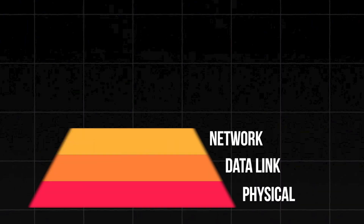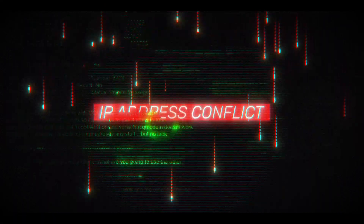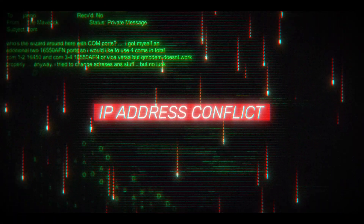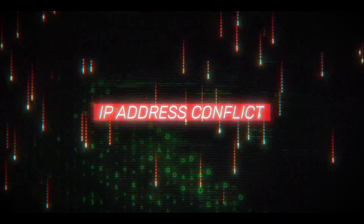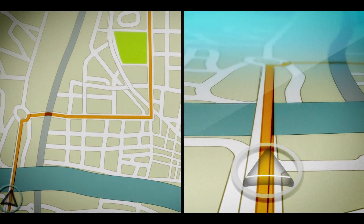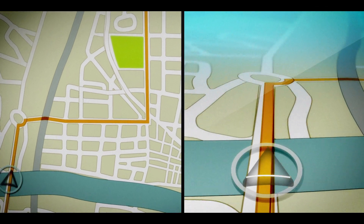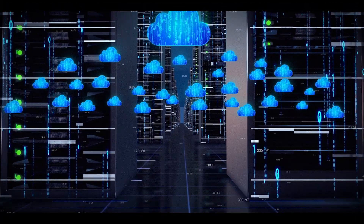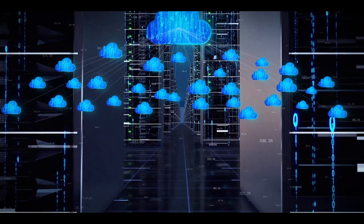Now we hit the network layer — the routing mastermind. This is where routers shine, using IP addresses to send data across different networks. It's like a GPS figuring out the best highway to get your data from your phone to a server in another country. Logical addressing happens here, making sure data knows where it's going. This layer is the bridge between local and global connectivity.